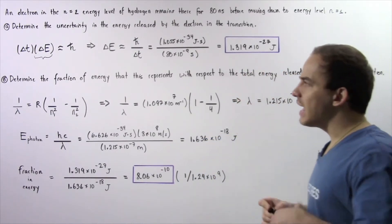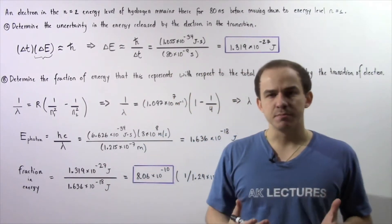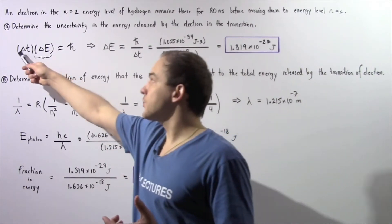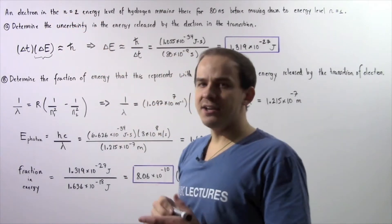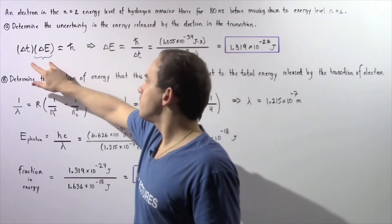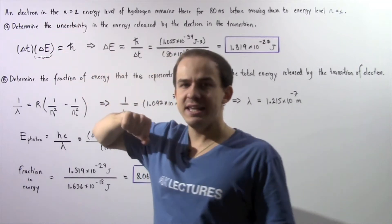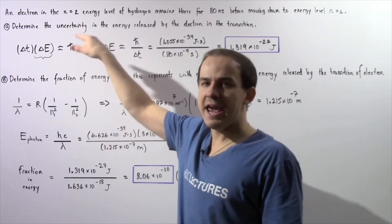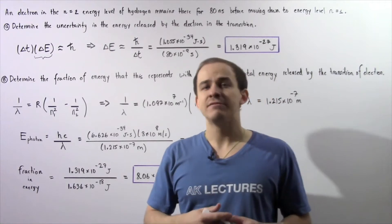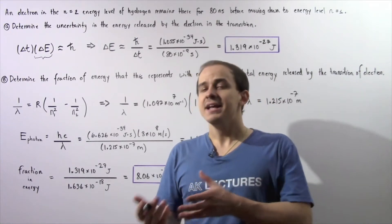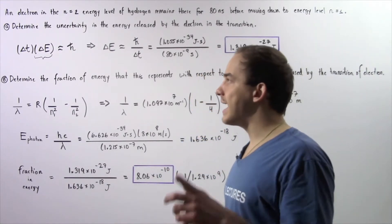Let's begin by applying the Heisenberg uncertainty principle that relates the uncertainty in time and the uncertainty in energy. The product of these two uncertainties is approximately equal to H-bar, our constant, which is 1.055 times 10 to the negative 34 joule-seconds.